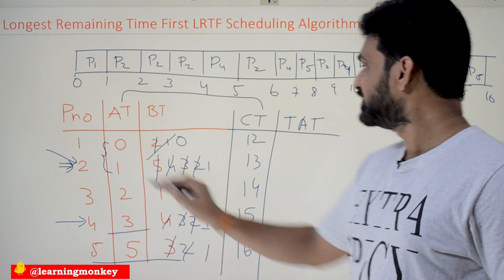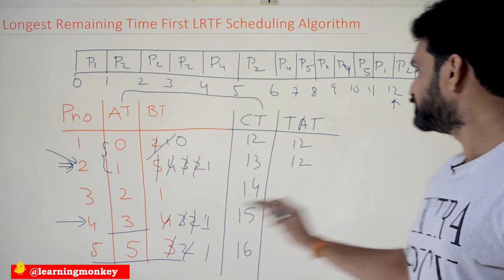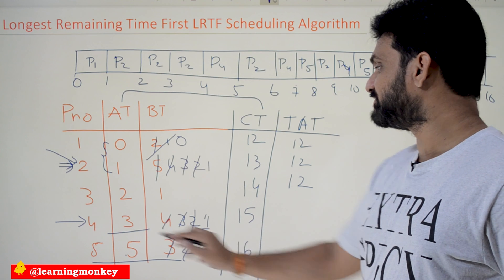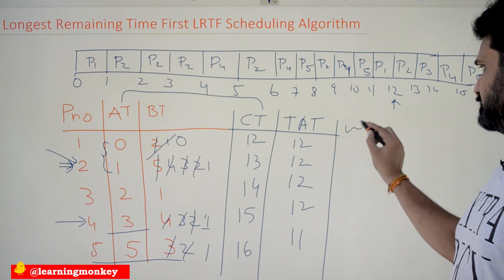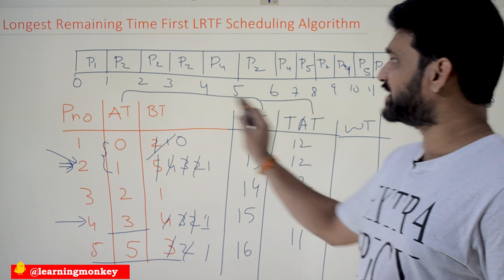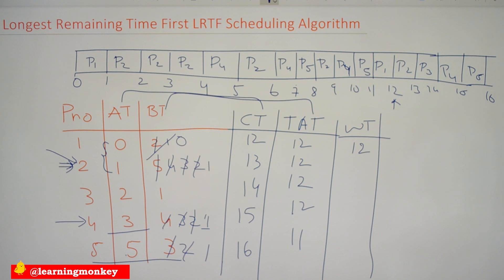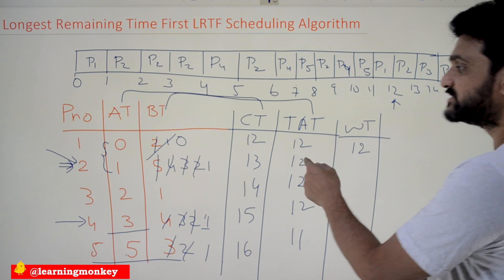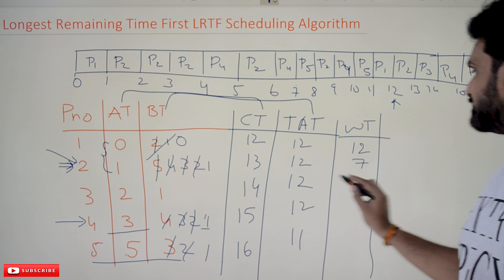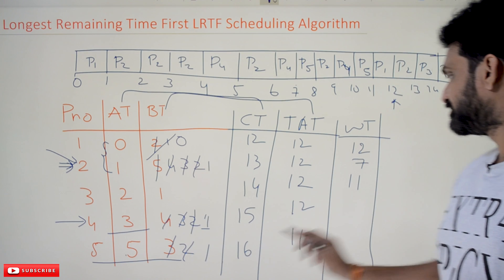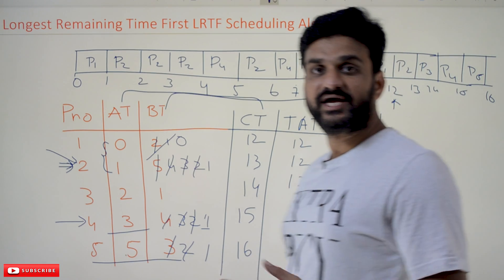The turnaround time equals completion time minus arrival time: P1 = 12 − 0 = 12, P2 = 13 − 1 = 12, P3 = 14 − 2 = 12, P4 = 15 − 3 = 12, P5 = 16 − 5 = 11. The waiting time equals turnaround time minus burst time: P1 = 12 − 0 = 12, P2 = 12 − 5 = 7, P3 = 12 − 1 = 11, P4 = 12 − 4 = 8, P5 = 11 − 3 = 8. These are the completion time, turnaround time, and waiting time values for this example.